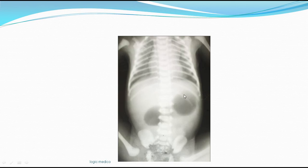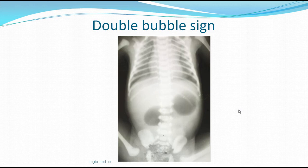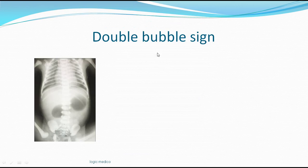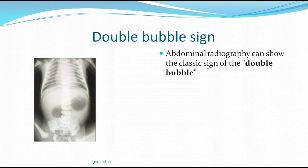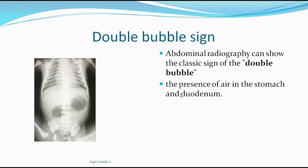On X-ray, there appears to be one air shadow for the stomach and another air shadow for the duodenum, where the annular pancreas is causing obstruction. This is called the double bubble sign — it appears as two bubbles inside the abdomen on an abdominal radiograph. The double bubble sign is a radiological finding in annular pancreas, but it is not diagnostic of it alone.